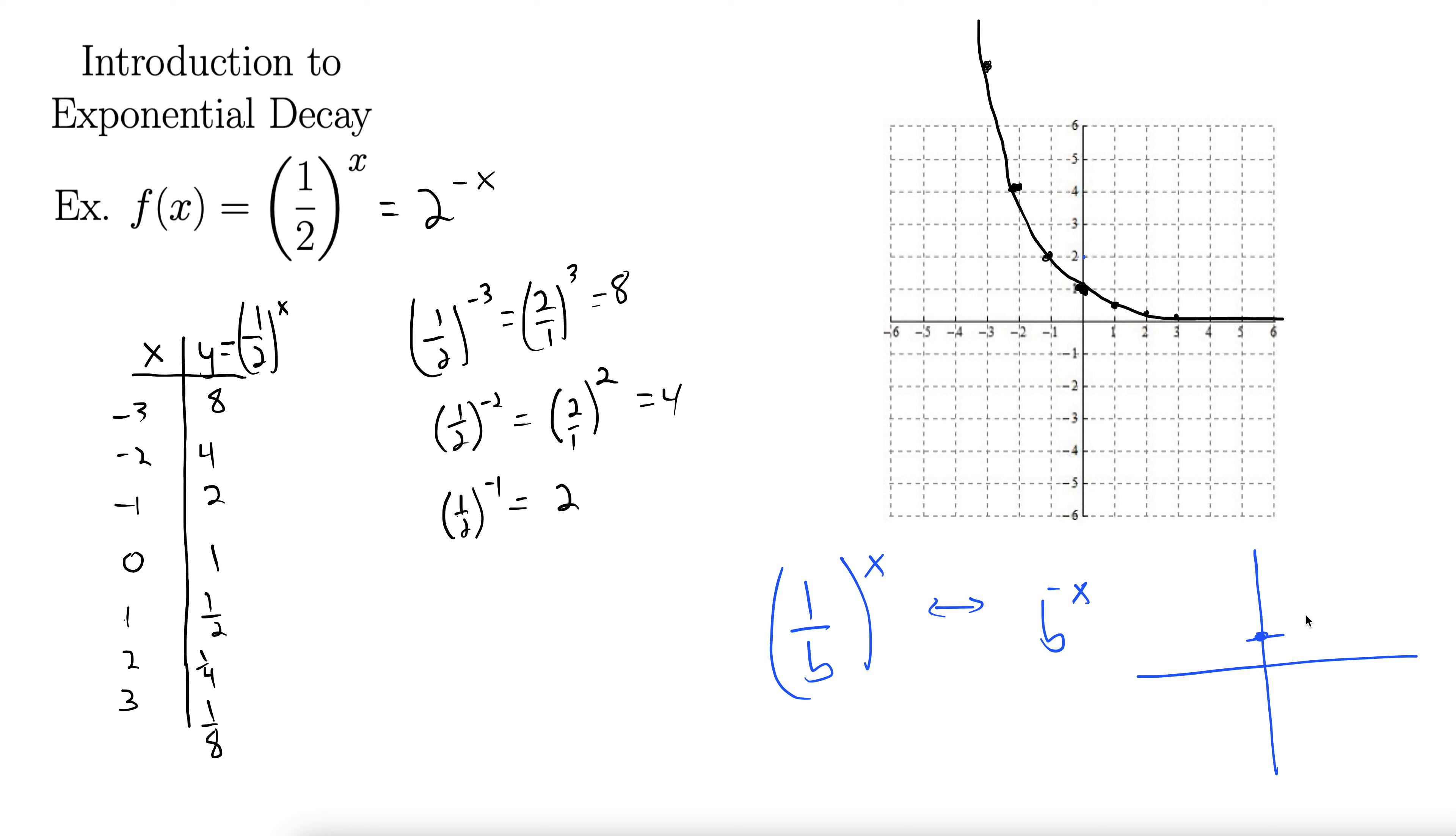It goes through the point 0, 1, and then it goes through another point, negative 1, b. And it comes down like so. It comes down and then gradually levels off, approaching the x-axis, but never touching it. So here's our exponential decay.